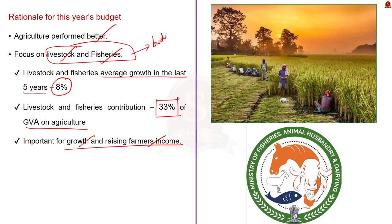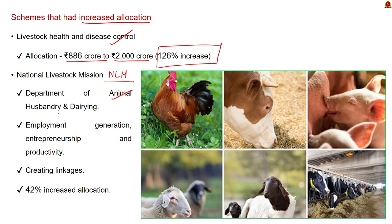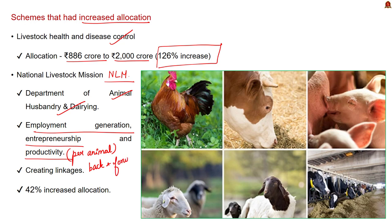According to the author, livestock and fisheries are important to achieve growth and increase farmers' income, so the government provided ample allocation towards them. The first scheme is Livestock Health and Disease Control, where budgetary allocation increased from 886 crore to 2000 crore — a 126% increase. The next one is National Livestock Mission, implemented by the Department of Animal Husbandry and Dairy. It aims at employment generation, entrepreneurship development, and increase in per animal productivity, and received a 42% increase — 100 crore more than last year.